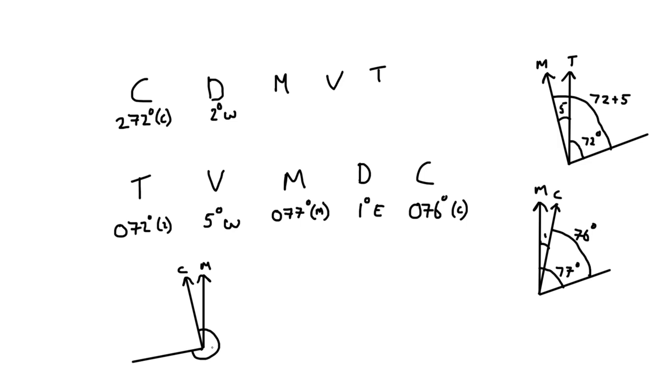So that's all the way around there is 272. We've said the difference between the two here is 2 degrees. And we can immediately see that we're going to need to take the 2 degrees off of that to get to magnetic. So that's going to be 270 degrees magnetic.